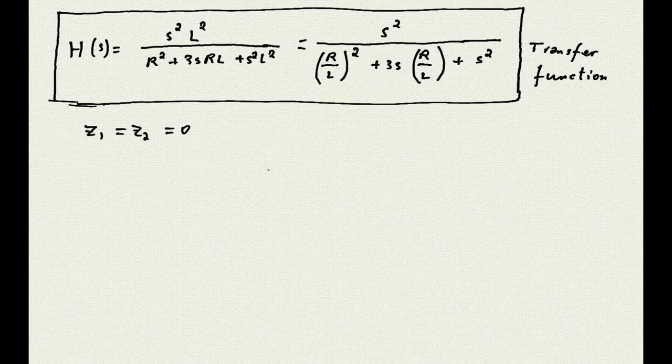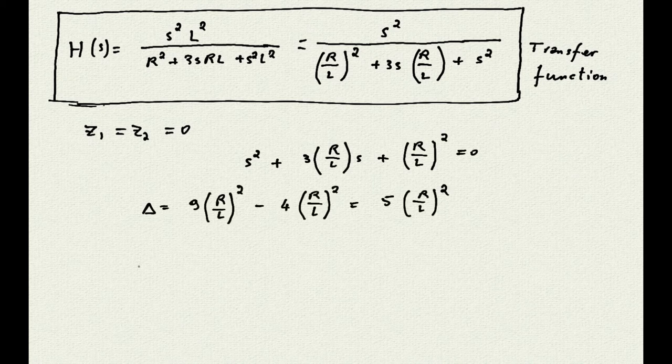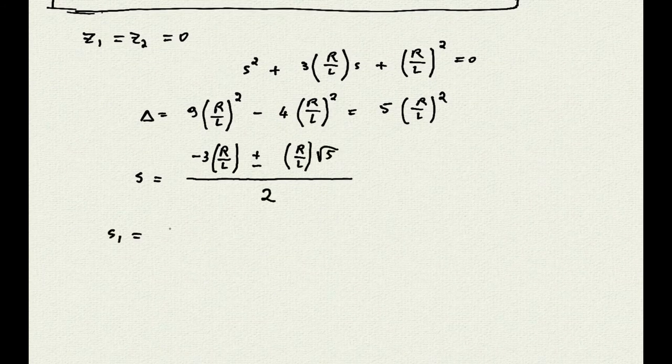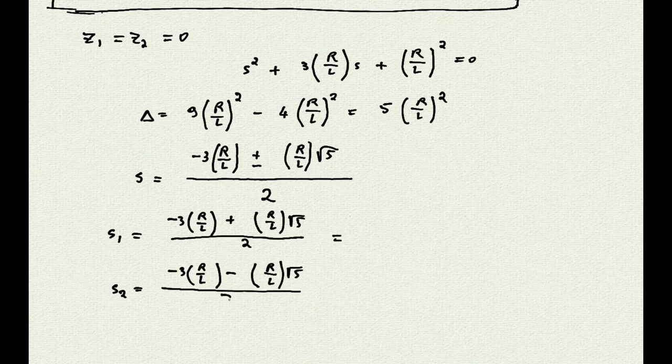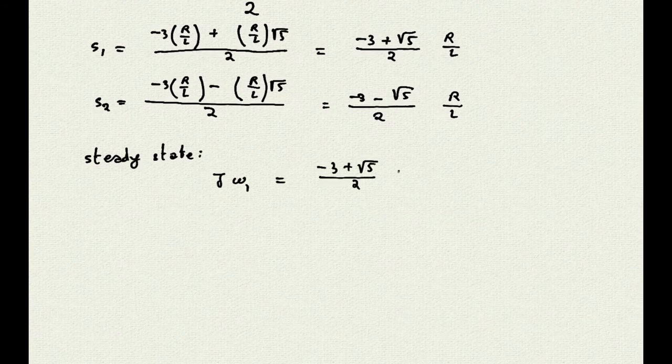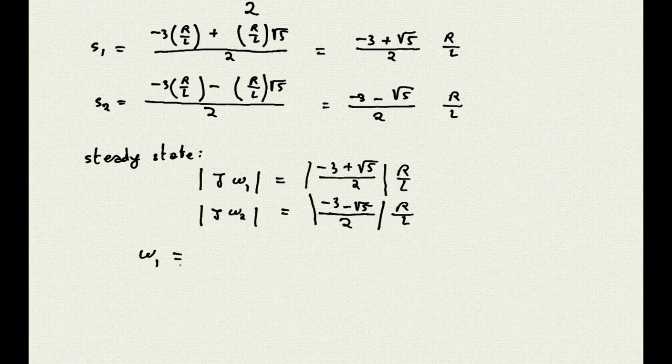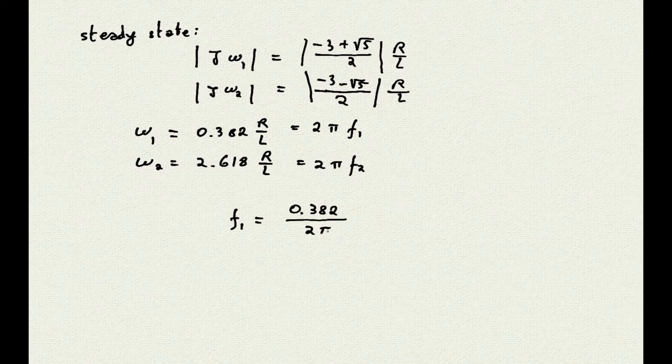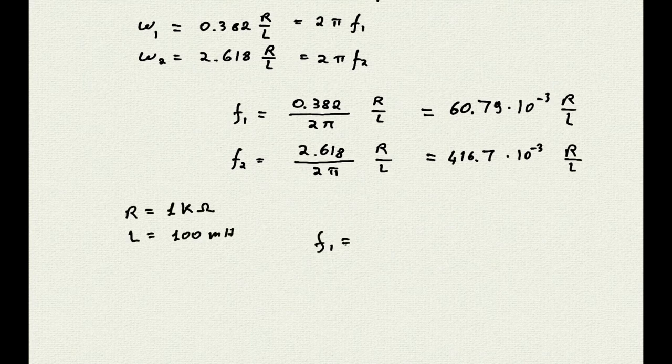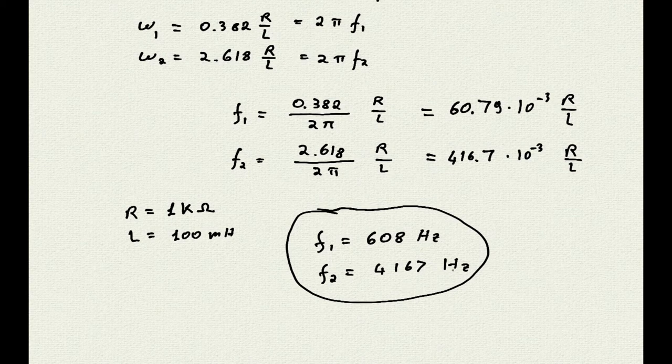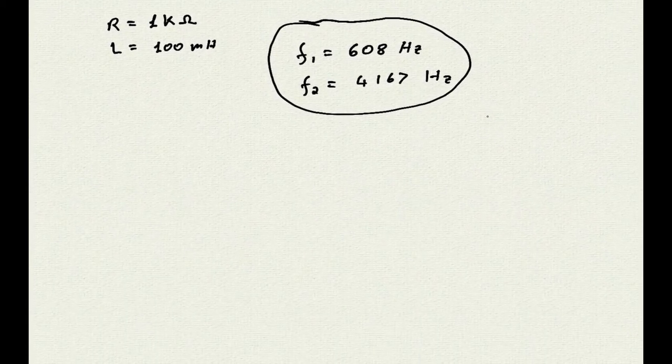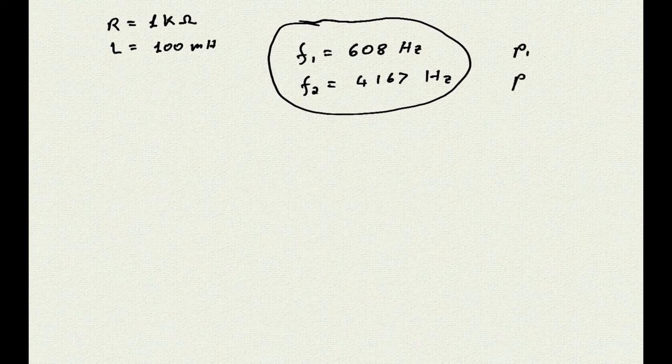This time, however, they correct the value of R over L. Fast-forward again a little bit, and here are the values of the two poles in Hertz when we set the components to 1 K and 100 mH. And so we have an F1 of 608 Hertz and an F2 of 4167 Hertz. And this is the list of our poles and zeros.